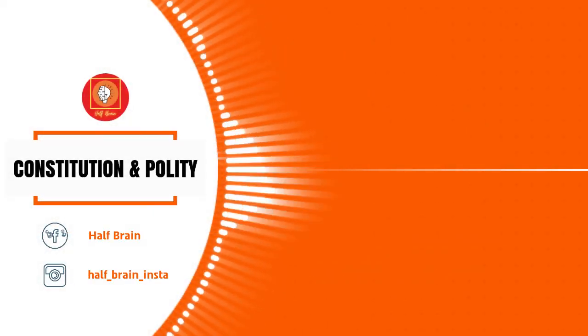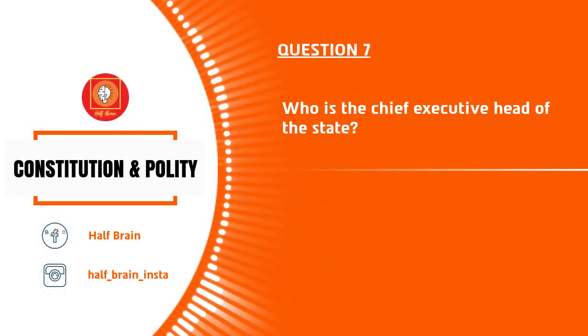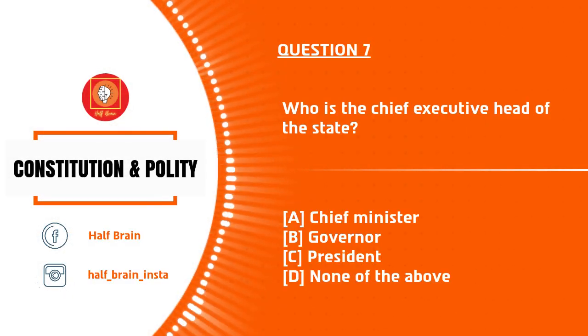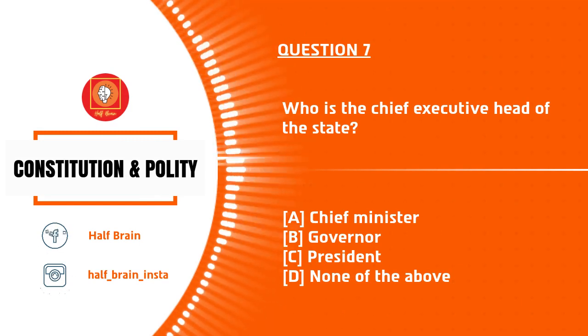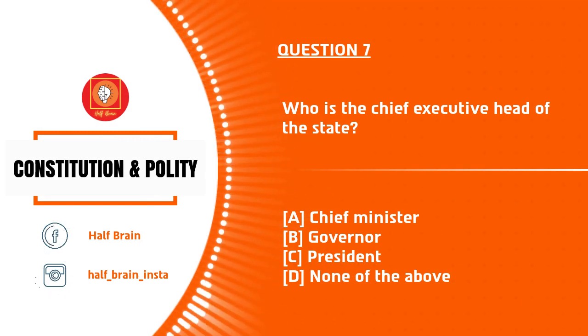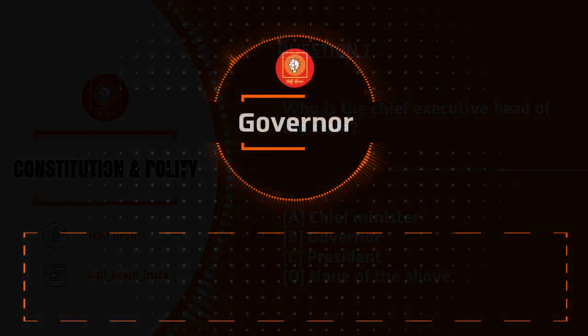Question number 7: Who is the Chief Executive Head of the State? Options are chief minister, governor, president, or none of the above. The answer is Governor.